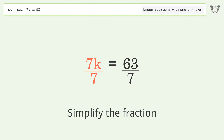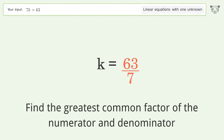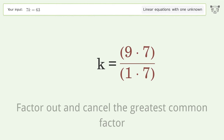Simplify the fraction by finding the greatest common factor of the numerator and denominator, then factor out and cancel the greatest common factor.